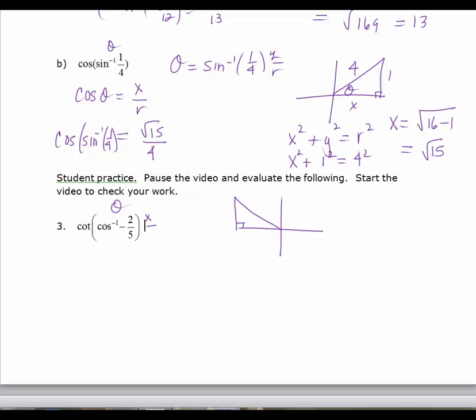Cosine is x over r, so I know r is positive, so r is 5. Then your x value is going to be negative. We need to find y. Remember this is our theta.